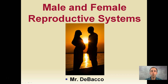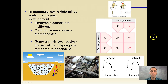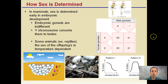Here we're going to look at a brief overview of the male and female reproductive systems. Starting with how sex is determined: in mammals, sex is determined early in embryonic development. Early on, embryo gonads are indifferent — neither male nor female. The presence of a Y chromosome will convert the gonads into testes, defining a male.